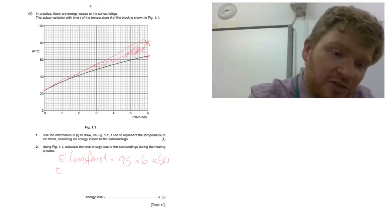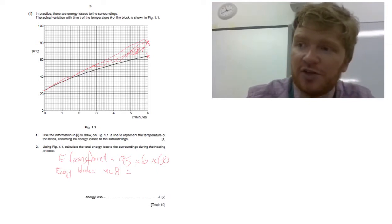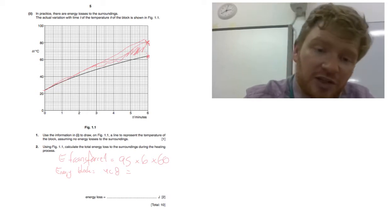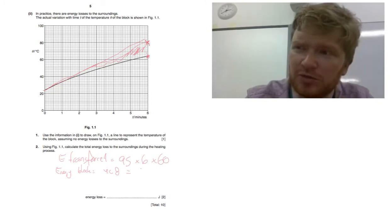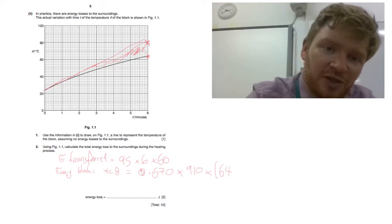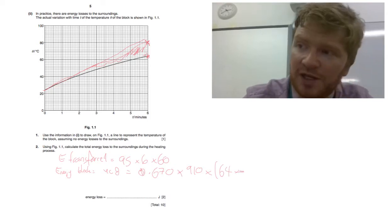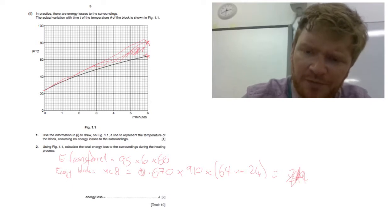And then I can say, well, what's the difference in energy between the energy that's going to here? Because I've got this point up here. That's the energy that's going into the block. So I can say that energy in the block will be MC theta, which is 0.670, which is the mass, times the heat capacity, which is 910, times the temperature change, which is 64. Because that's what we would see over here. This is at 64. Take away 24. That comes out to 24,400 joules.